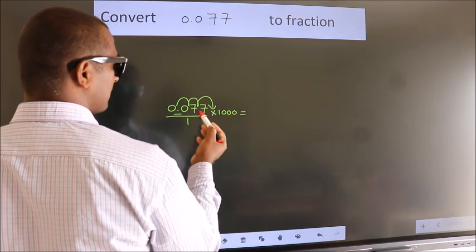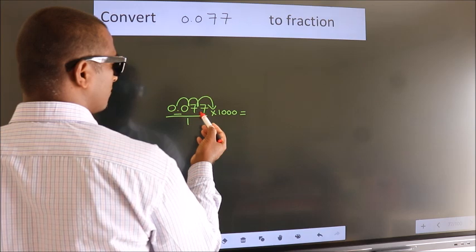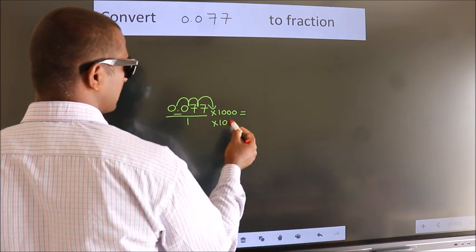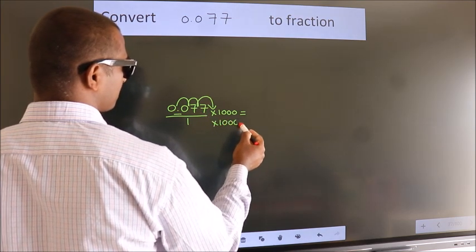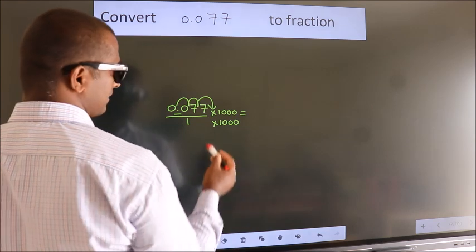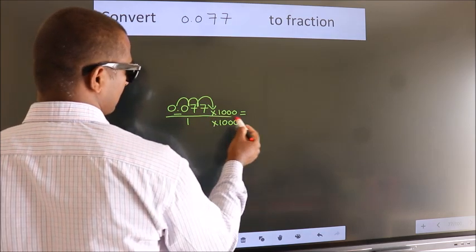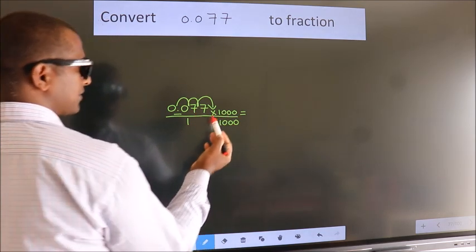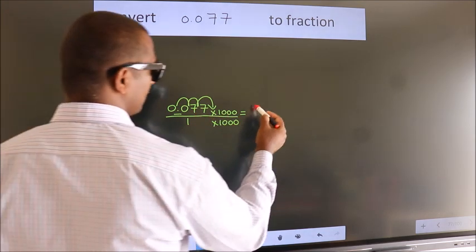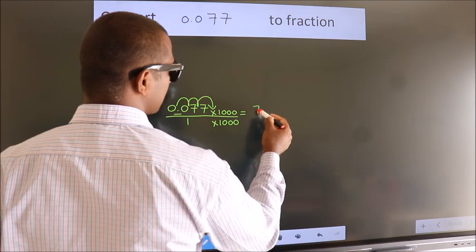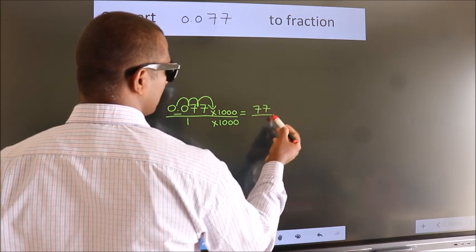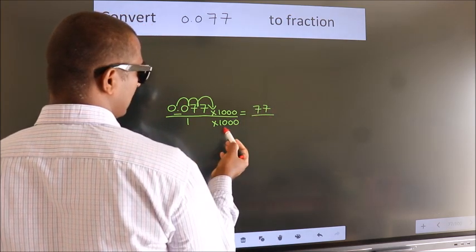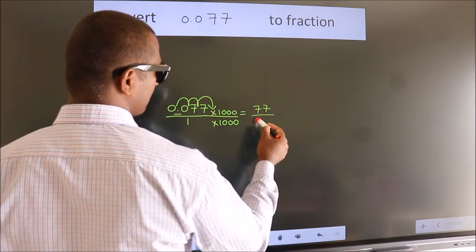Whatever we are multiplying in the numerator, in the denominator also we should do the same. So, 0.077 multiplied by 1000, we get 77. In the denominator, 1 into 1000 is 1000.